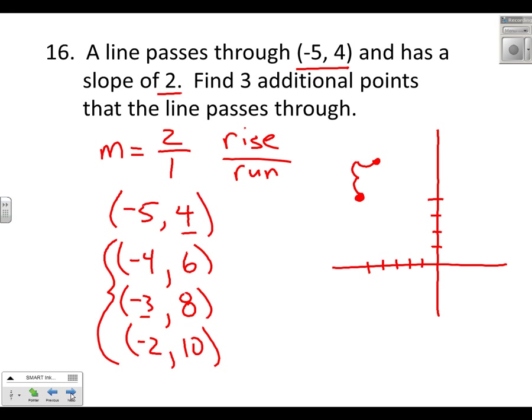Of course we could do that backwards as well, because 2 over 1 is the same as negative 2 over negative 1. So we could have risen negative 1 from 4, which is actually a fall of 2, down to 2. Run negative 1 from negative 5, or move to the left, to negative 6. So obviously our answers could vary on this. But use a graph if you need to, but kind of nice to think through without the aid of the graph.